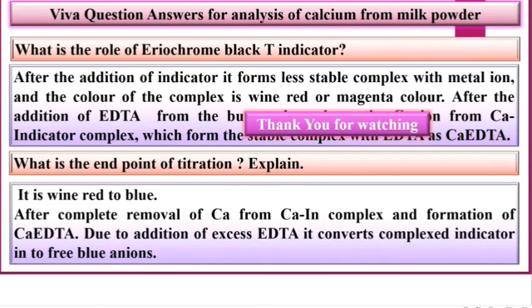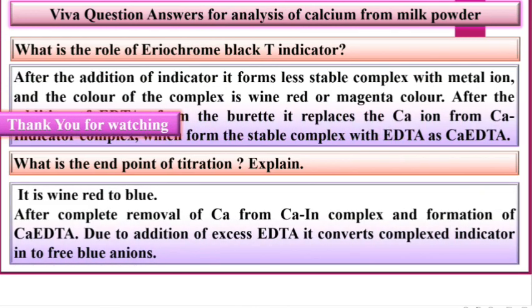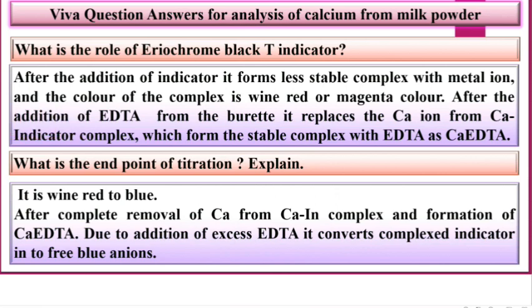What is the end point of the titration? It is wine red to blue. After complete removal of calcium from the calcium-indicator complex and formation of CA-EDTA, due to addition of excess EDTA, it converts the complex indicator into free blue anion.